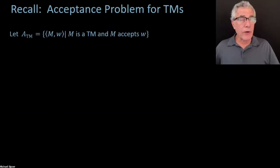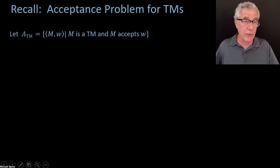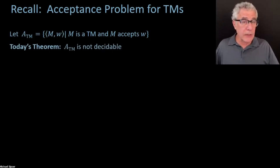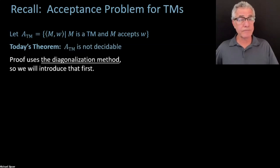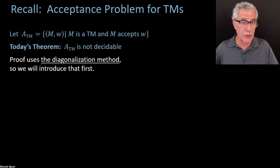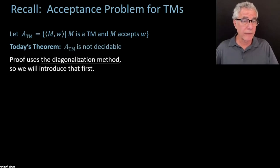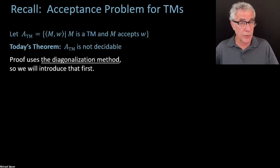The acceptance problem for Turing machines: ATM is the language of Turing machines and inputs where the machine accepts the input. We showed it was recognizable; today we prove it's not decidable. The method we'll use — really the only method for proving undecidability — is called the diagonalization method. The reducibility method also exists but ultimately depends on having first shown some problem undecidable via diagonalization.